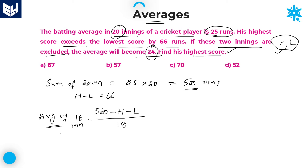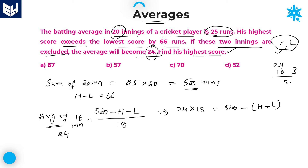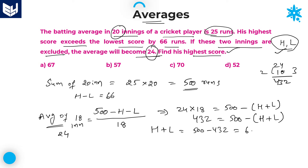By cross multiplication: 24 into 18 equals 500 minus (H plus L). 24 into 18 equals 432. So H plus L equals 500 minus 432, which is equal to 68.